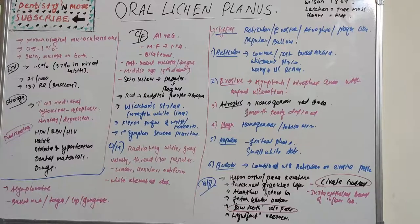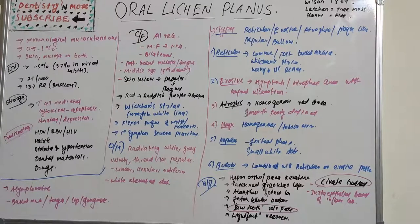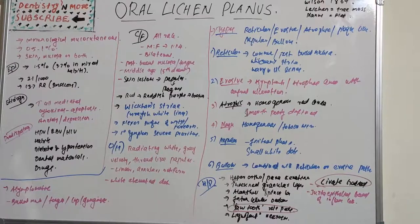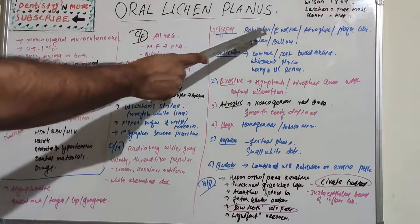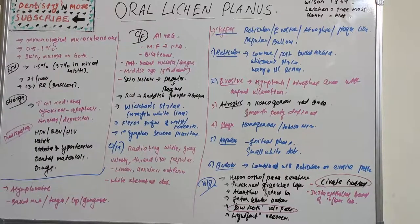The bullous type is a rare form showing vesicular-bullous presentation combined with a reticular or erosive pattern. It is characterized by large vesicles or bullae. Lesions usually develop with an erythematous base and rupture immediately, leaving a painful ulcer. They usually have peripheral radiating striae and are seen on the posterior buccal mucosa. Severe forms show extensive degeneration and separation of epithelium from connective tissue.